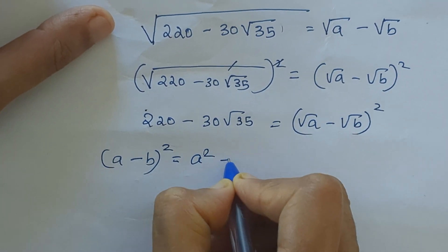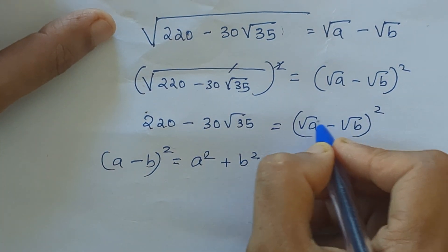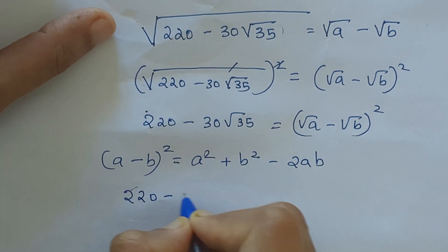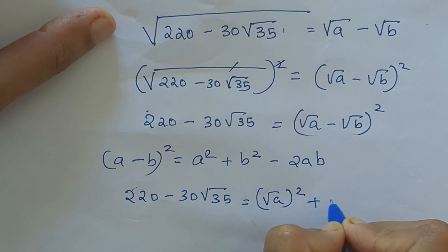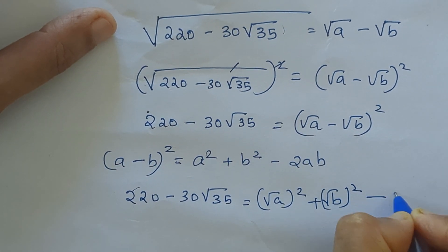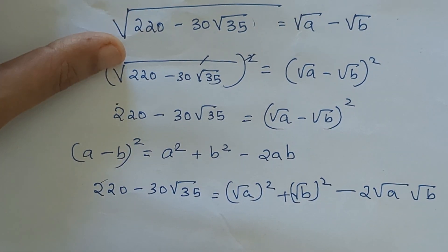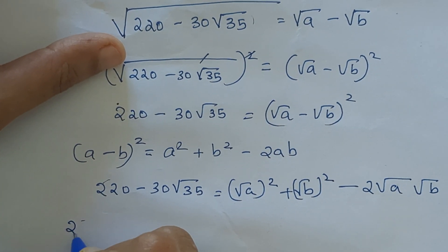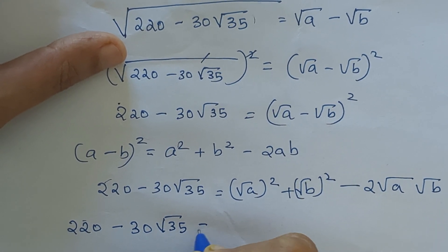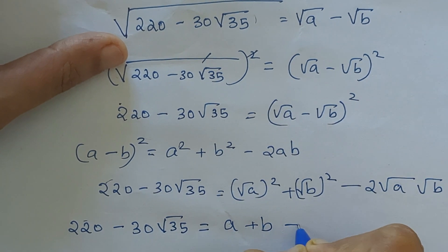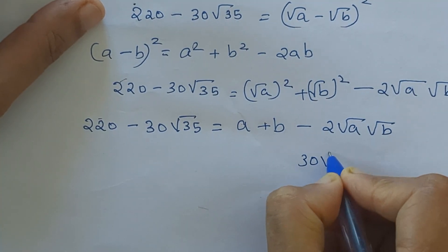You know that (a minus b) all squared equals a squared plus b squared minus 2ab. Expanding here, we get 220 minus 30 root 35 equal to (root a)² plus (root b)² minus 2 root a into root b, which simplifies to a plus b minus 2 root(ab).